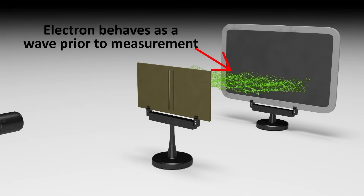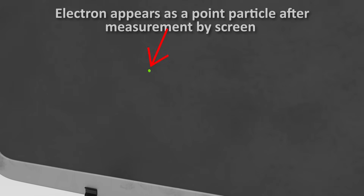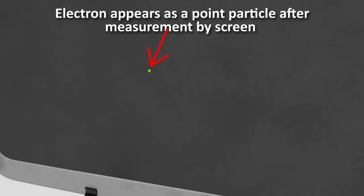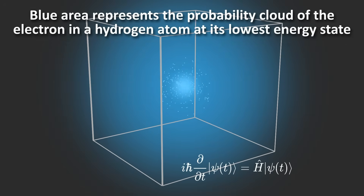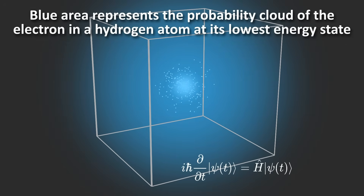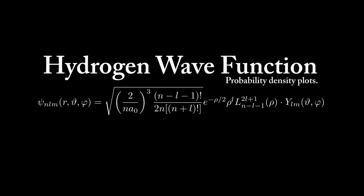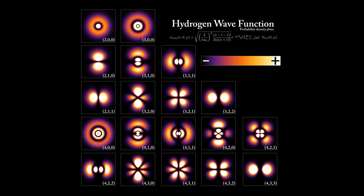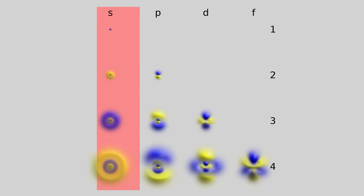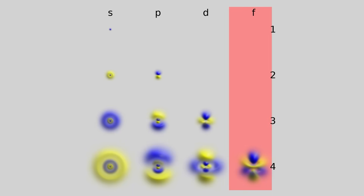The Schrodinger equation introduced the concept of thinking of electrons as waves. This is where the phrase wave-particle duality comes from — electrons can have properties that make them appear as both, though they are really always waves. This equation predicts the probability of finding an electron in a certain location around the nucleus rather than in fixed paths. Its solution provides us with atomic orbitals, or regions in space around the nucleus where the probability of finding an electron is highest. These orbitals form the basis of electron shells and subshells — S, P, D, and F — each with a unique shape and energy level.